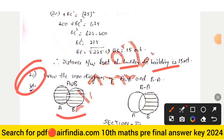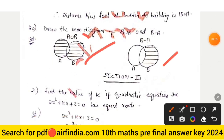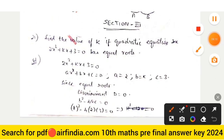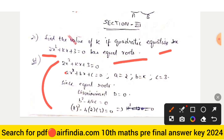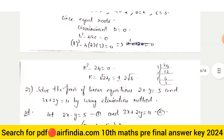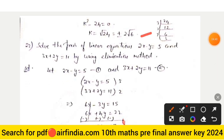Question 20: find A union B and B minus A. Section three, question: find the value of K if the quadratic equation 2x² + Kx + 3 = 0 has equal roots. With A = 2, B = K, C = 3, and discriminant D = 0: K² − 4(2)(3) = 0, so K² = 24, giving K = ±2√6. Question 22: solve the pair of linear equations 2x − y = 5 and 3x + 2y = 0 by elimination method. Multiplying the first equation by 3 and the second by 2, then subtracting gives y = 1. Substituting back, x = 2.